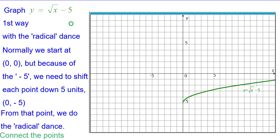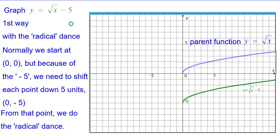Connect the points and we have y equals the square root of x minus 5. Here's the parent function y equals the square root of x and you can see they are identical except for position.